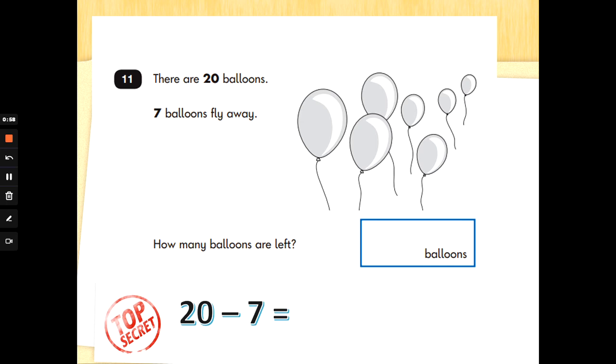Now we want to subtract. We're going to count back. 7 fingers up. Let's count backwards from 20. 20, 19, 18, 17, 16, 15, 14, 13.